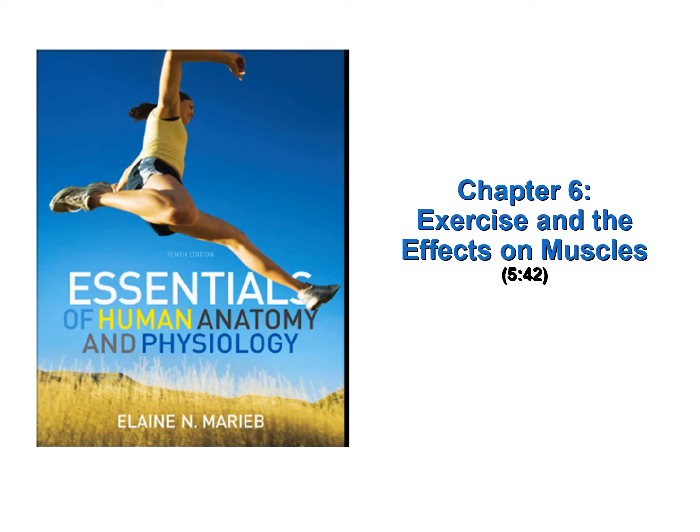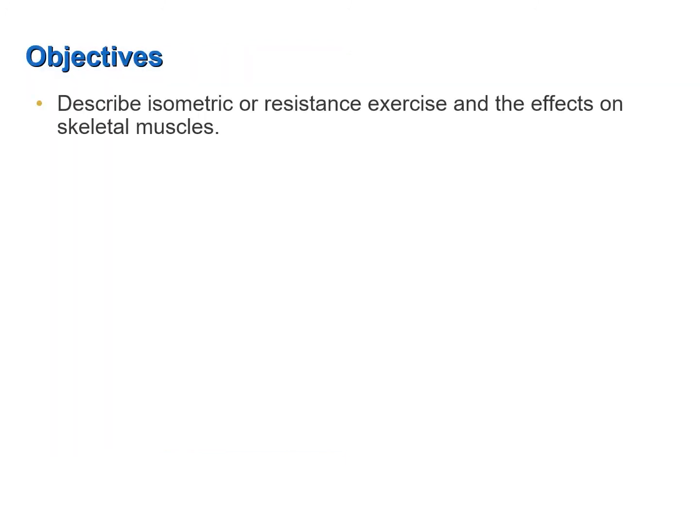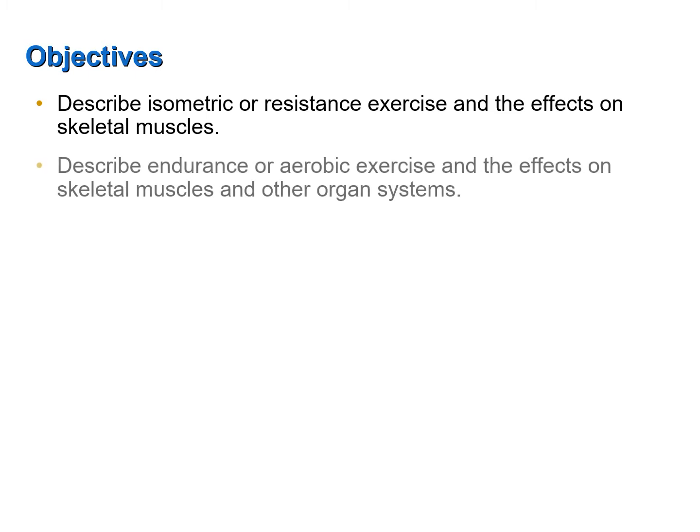The topic of this screencast is Exercise and the Effects on Muscles. This topic may be found in Chapter 6 of your textbook. This screencast was designed to help you achieve the following objectives: describe isometric or resistance exercise and the effects on skeletal muscles, and describe endurance or aerobic exercise and the effects on skeletal muscles and other organ systems.